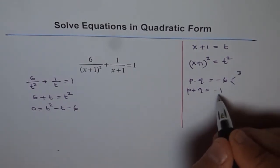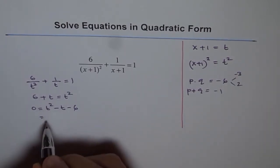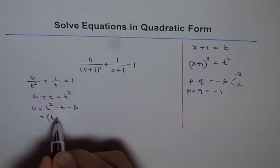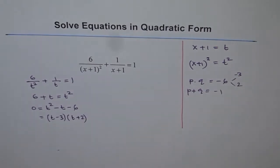3 should be negative because we want negative number after addition, 2 positive. So this could be written as t minus 3 times t plus 2. So that is the value of t.